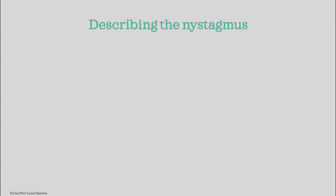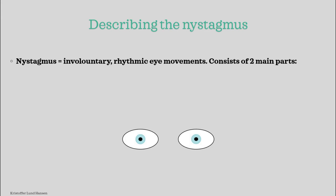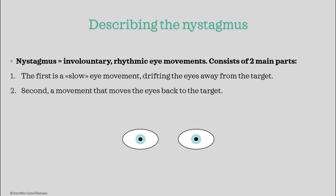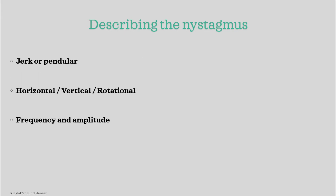Now to a more difficult part: describing the nystagmus. Describing the nystagmus is very important to assess whether we have a peripheral cause or a central cause. Nystagmus consists of involuntary and rhythmic eye movements, divided into two main phases: a phase where the eyes drift away from the target, and a movement that brings the eyes back towards the target. We want to describe nystagmus in three ways: type, direction, and frequency and amplitude.